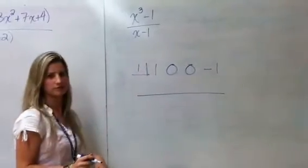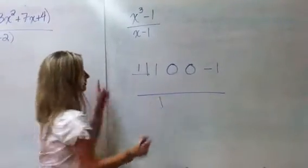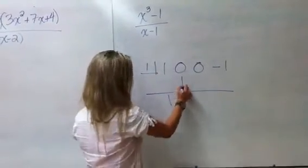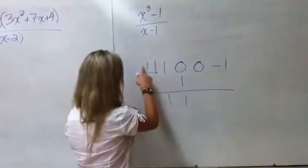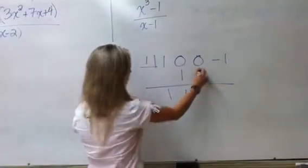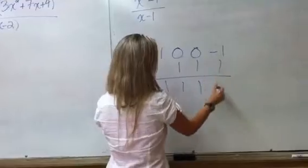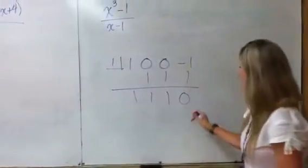So again, we are going to bring this down, and then it's going to be multiply, add, multiply, add, multiply, add. So 1 times 1 is 1. 0 plus 1 is 1. 1 times 1 is 1. 0 plus 1 is 1. 1 times 1 is 1. Negative 1 plus 1 is 0.